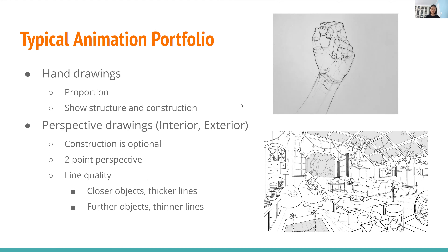For perspective drawings, depending on the school, you might not have to do both interior and exterior. Construction is optional but it might help. I think they would like to see a two-point perspective most. Line quality is really important here too — for example, closer objects have thicker lines and further objects have thinner lines, which gives a sense of depth. For tone, it's not necessary, but if it helps you can add a bit.